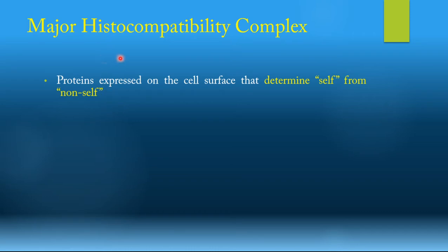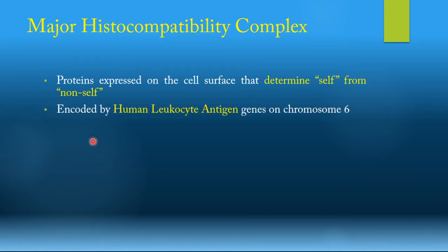They do this by presenting an antigen on this protein. Whatever this antigen is will tell the immune system if the cell is from it or not. MHC molecules are encoded in the genome by human leukocyte antigen, or HLA genes, that are present on chromosome 6.